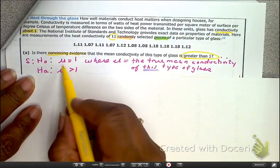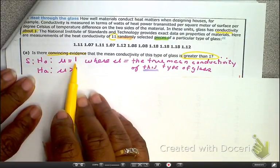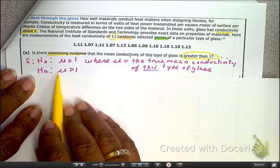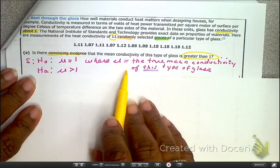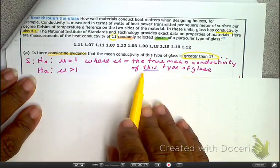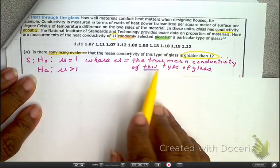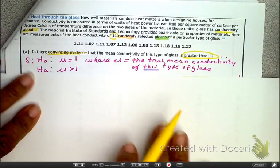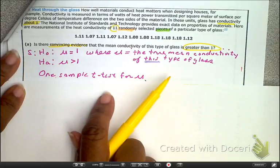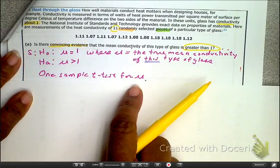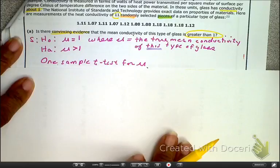So our H0 is that mu is going to be equal to 1. Our HA is mu is going to be greater than 1, just per what it says here, where mu is the true mean conductivity of this particular type of glass. And yes, it is a one-sample T for mu, for the population mean.